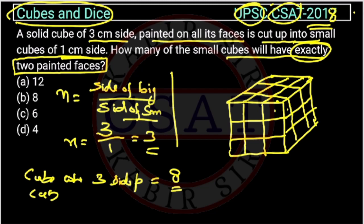Now, cubes which are painted 2 sides, or they are also called middle cube or edge cube. So the formula for that is n minus 2.